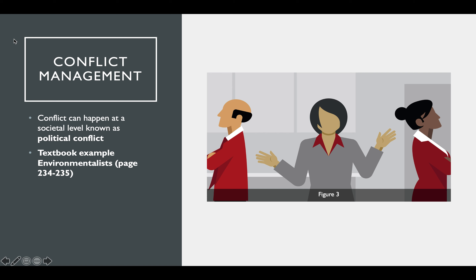Conflict can happen at a societal level, known as political conflict. In the textbook, they give an example of environmentalists advocating for economic interests, about how the environment is being destroyed, as well as illegal mining — and this is a sense of political conflict.